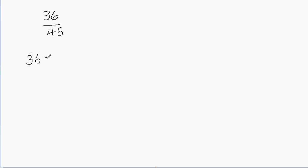Let's list down the factors of 36. 1 is a factor of 36 — 1 is a factor of every number. 2 is a factor of 36 because 36 is an even number, so it's divisible by 2. How about 3? To check whether 36 is divisible by 3, we add the digits: 3 plus 6 gives us 9. If the sum of the digits is divisible by 3, then the whole number is divisible by 3. Since 9 is divisible by 3, 36 is divisible by 3. That's the divisibility rule for 3.